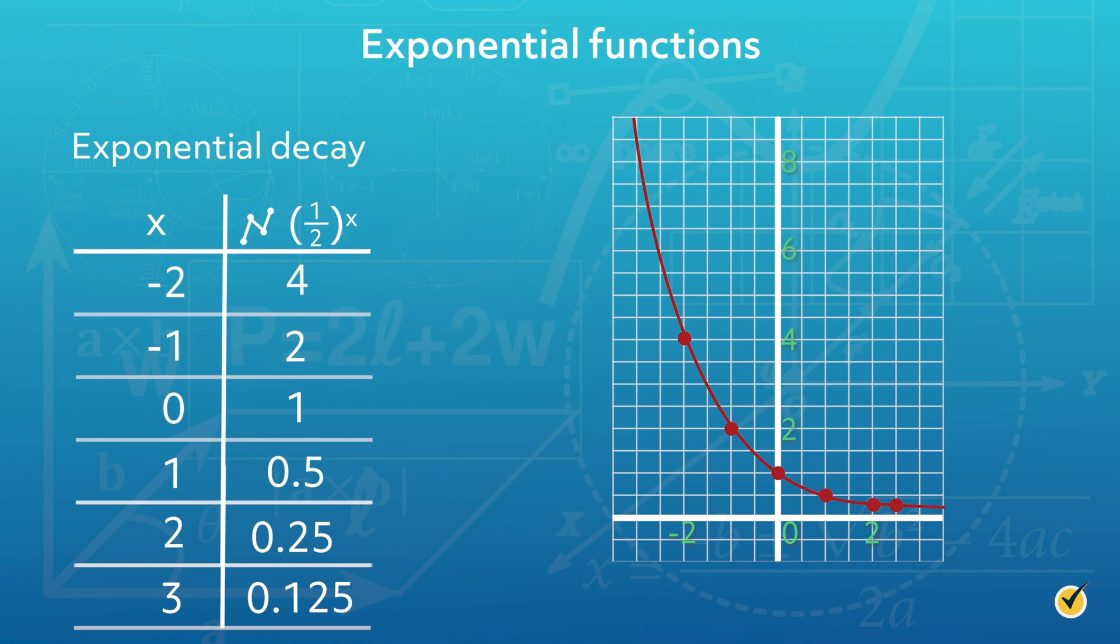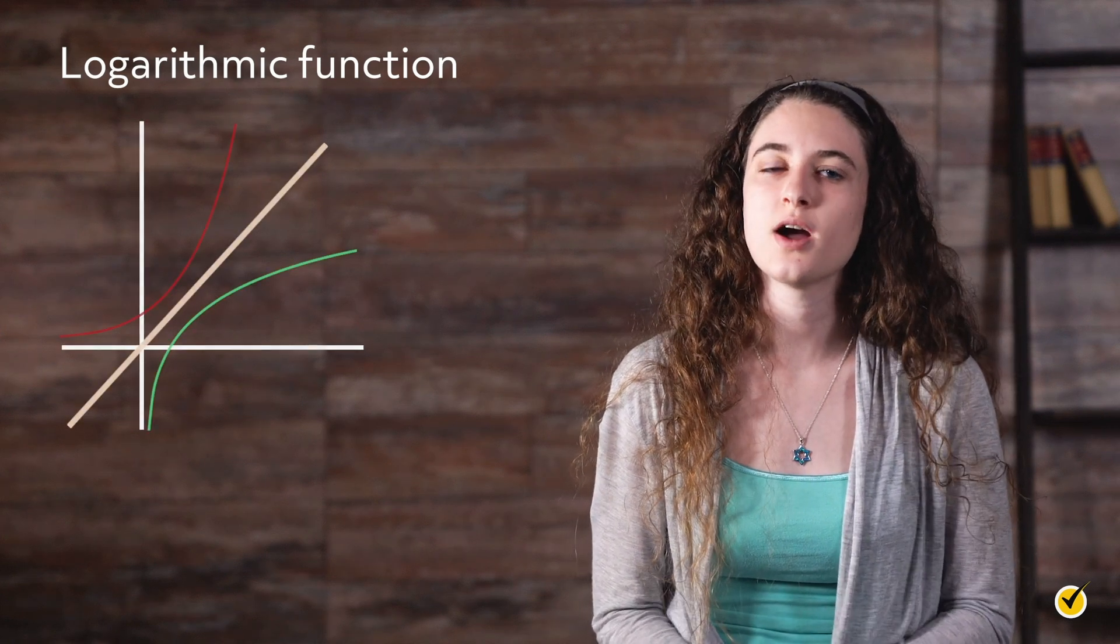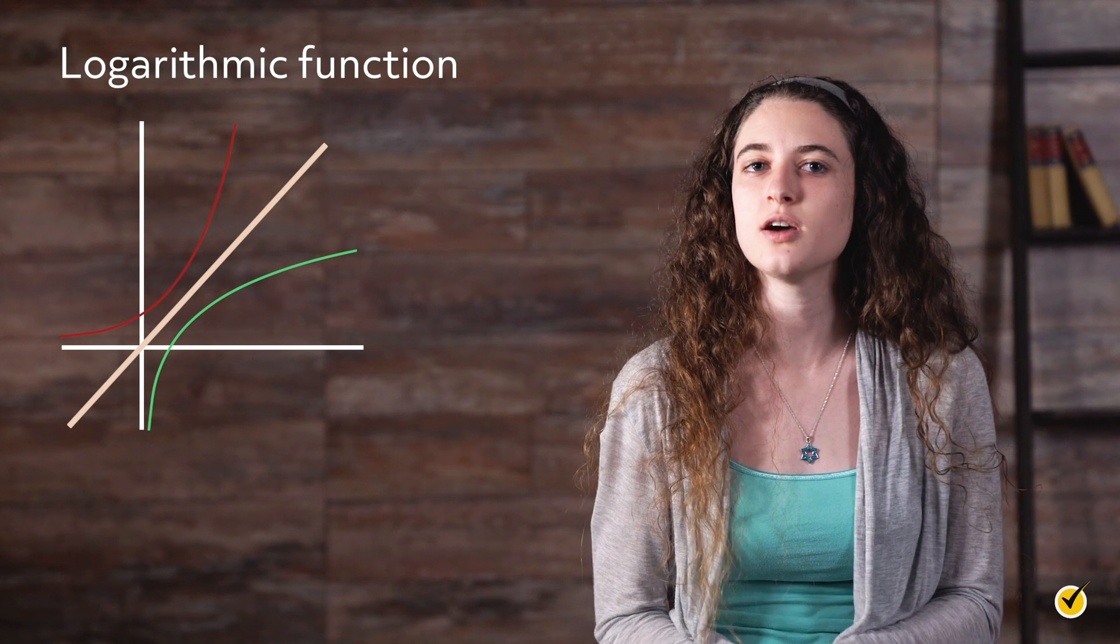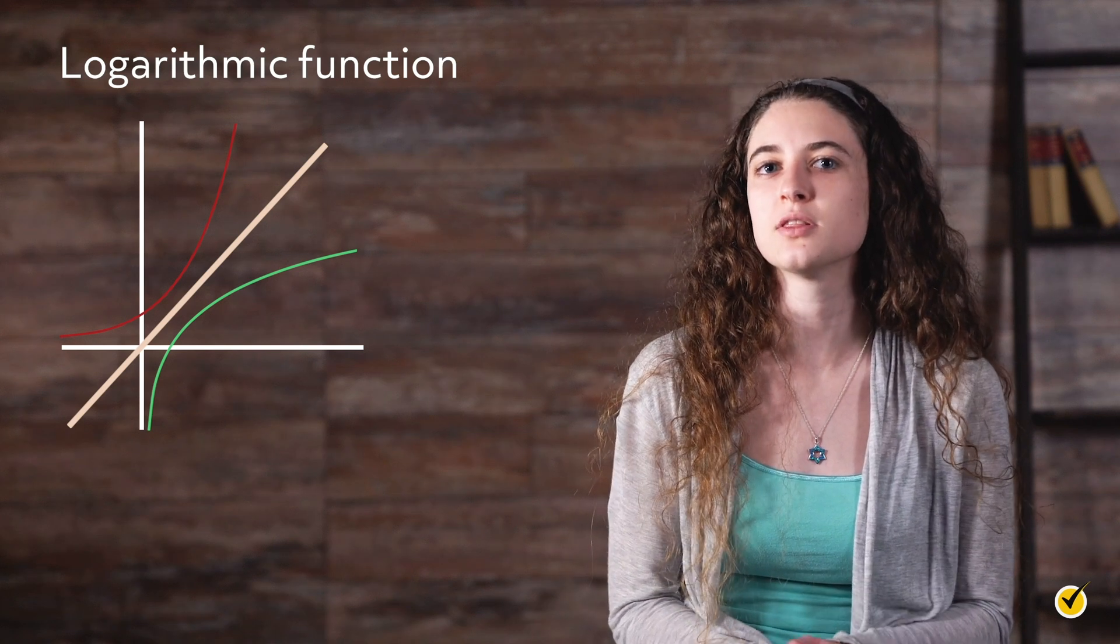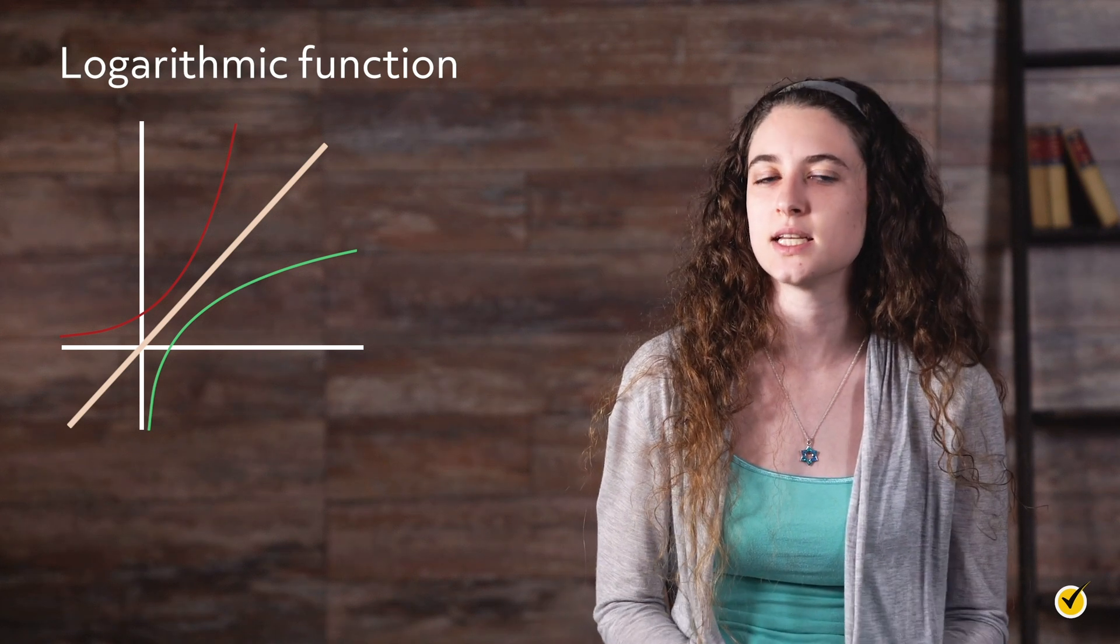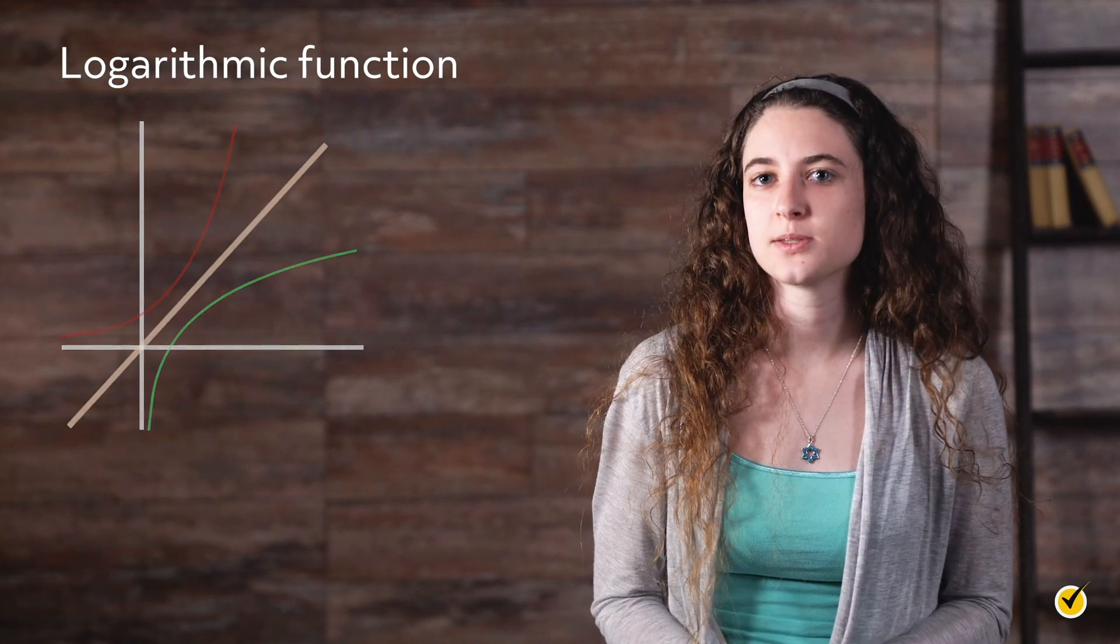A logarithmic function, or log function, is the inverse of an exponential function. The graph of a log function is the reflection of an exponential function about the line y equals x, the identity function. Let's take a closer look at the parts of an exponential function and a log function so the inverse relationship can be understood better.